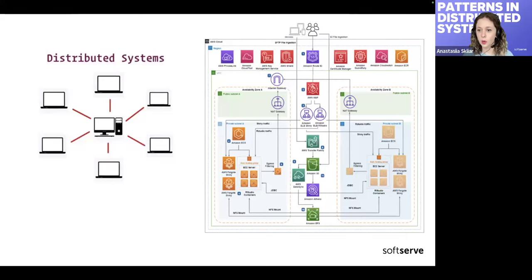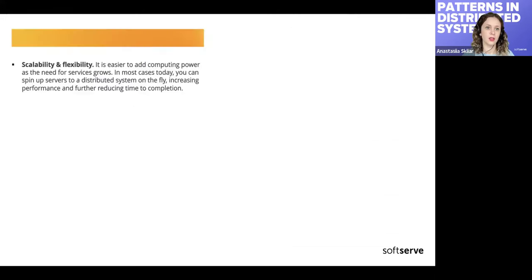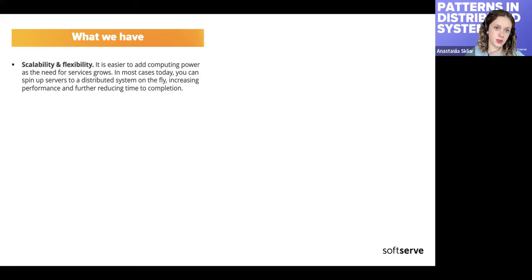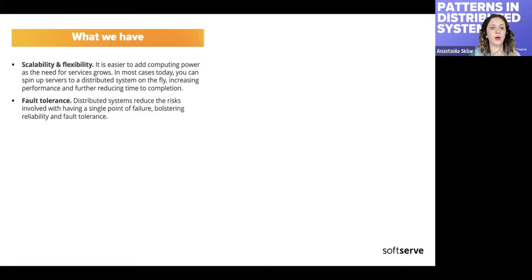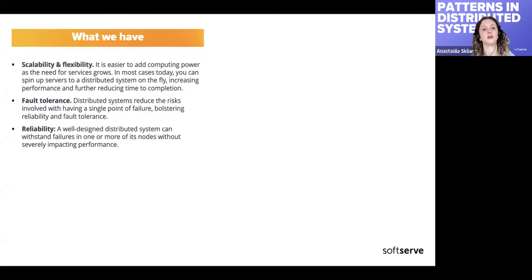What possibilities do we have with distributed systems? There is obviously scalability and flexibility — we can add more services, improve performance, scale up during peak hours, and scale down at night. We have fault tolerance: if one part of our system fails, the system should still keep working. We also have reliability: a well-designed distributed system can withstand some failures.